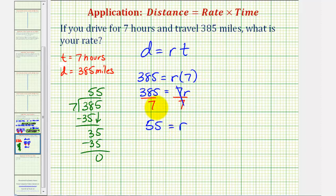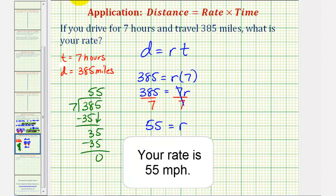And the units would be miles per hour. Notice how the units for 385 would be miles, and the units for seven would be hours. So your rate is 55 miles per hour.